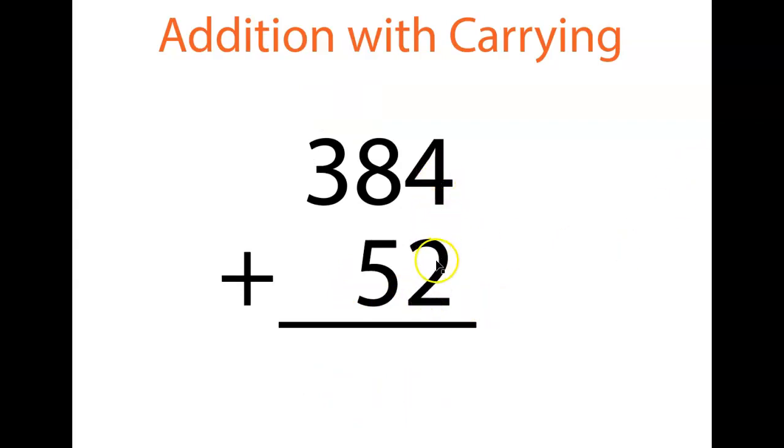First, we do the ones column, four plus two. That gets us six, no carrying necessary. Eight plus five, that gets us 13. So we place the three, carry the one.